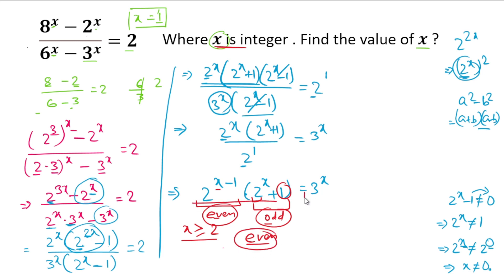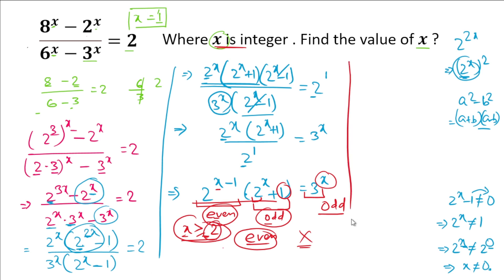But the right-hand side is 3^x, which is always odd for any integer x. So for x ≥ 2, we have even = odd, which is a contradiction. Therefore x ≥ 2 does not satisfy the expression. Now let's verify x = 1: we get 2^(1-1) · (2^1 + 1) = 2^0 · 3 = 1 · 3 = 3, and 3^1 = 3.